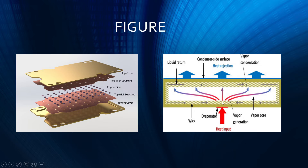For example, taking water as the working fluid: when heat is absorbed, the water vaporizes, rises up, fills the vacuum, and when it contacts the cooler side it condenses and flows back down through gravity or capillary force. It then enters the evaporator again, absorbs heat, vaporizes, fills the vacuum, contacts the cooler surface, condenses, and flows back down — repeating this cycle continuously.